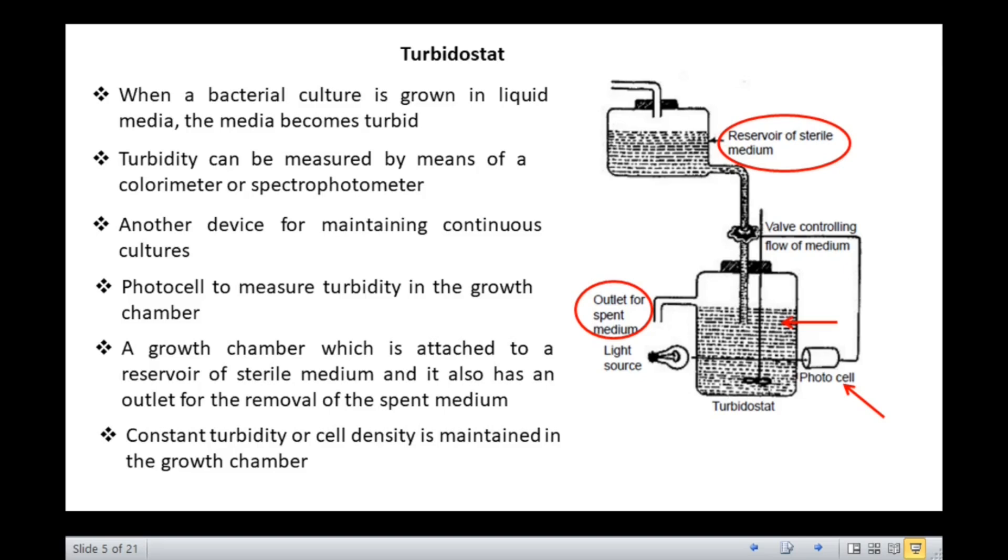Unlike the chemostat, the culture medium does not have a limiting nutrient and also does not have a constant dilution rate. Therefore, the turbidostat operates best at high dilution rates.